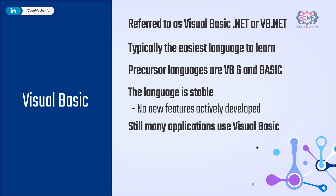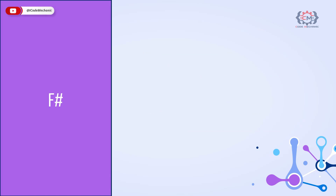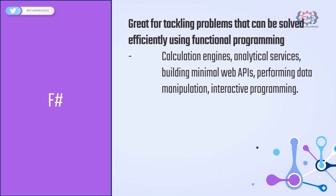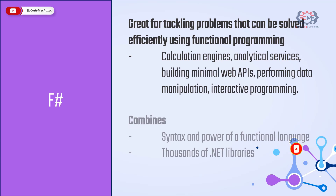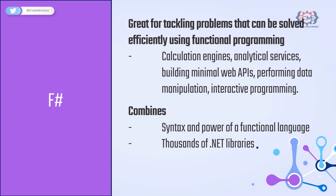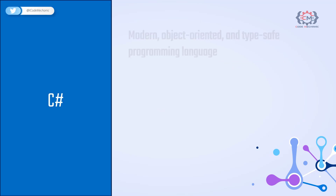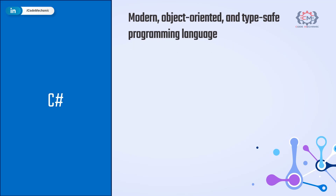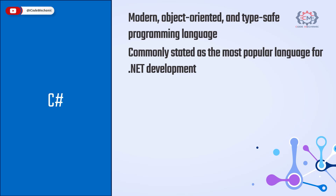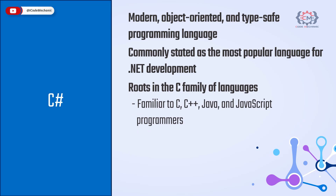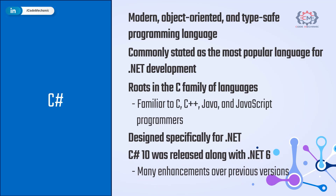Next is F#, which is great for dealing with problems that can be solved efficiently with functional programming — such as calculation engines, analytics services, building minimal web APIs, and data manipulation. It combines the syntax and power of a functional language with thousands of .NET library functions. Finally, C# — a modern, object-oriented and type-safe programming language widely regarded as the most popular .NET development language. C# is based on the C programming language family, built specially for .NET, and C# 10 was released in parallel with .NET 6.